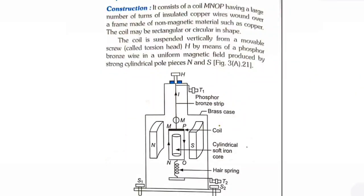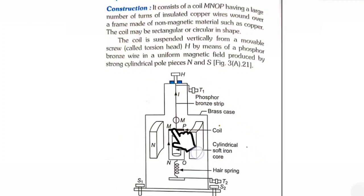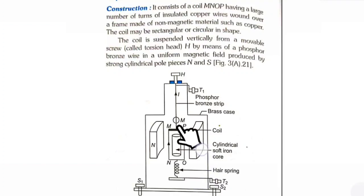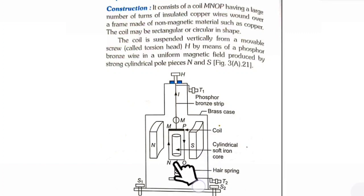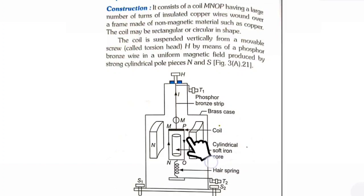Let us study the construction of a moving coil galvanometer. This is the basic structure. Here MNOP is a coil with a large number of turns of insulated copper wire, wound over a frame made of non-magnetic material such as copper. You can also use a cylindrical soft iron core. The purpose of this soft iron core is to make the field uniform. The field is set up by two magnets whose poles are not flat but radial.